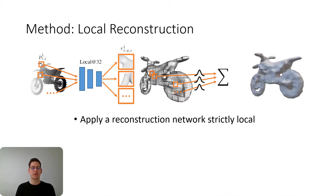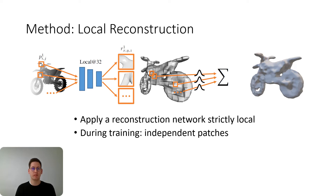Let's have a look at the first part of our method: the local reconstruction module, which enables the learning of local priors for recombination. We apply a reconstruction network such as occupancy networks strictly locally on patches from the input image. We train this network on patches from the input image and the corresponding 3D ground truth part. For training it doesn't matter where this patch is located. During inference we perform a sliding window in order to retrieve the full shape, and if patches are overlapping we can simply average in the overlapping regions.